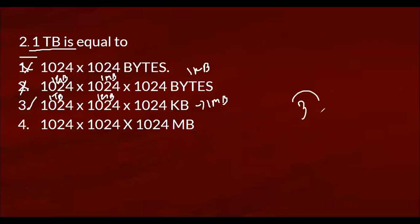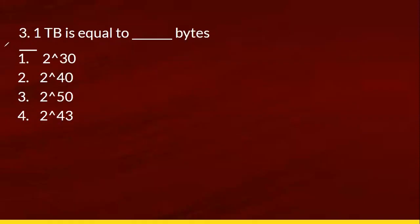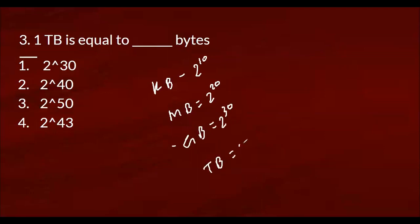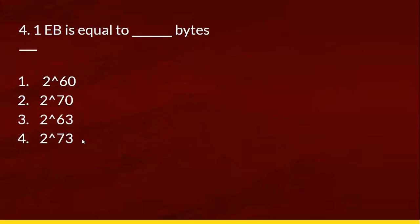1 GB into 1024 equals 1 TB. So 1 MB into 1024 gives the next unit, continuing up the chain: terabyte, petabyte, exabyte.